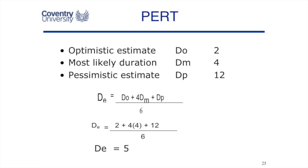We put those figures into this equation, where we take one of the optimistics, four of the most likelies, and one of the pessimistic. That's going to give us six durations. So we divide our answer by six.